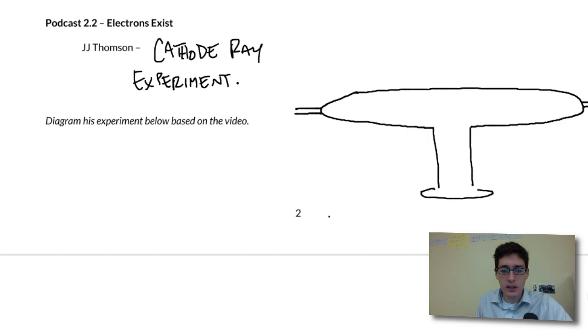So go ahead and sketch this. He had this experiment called a cathode ray, and it's like a laser beam. But the laser, rather than being light, is electrons.